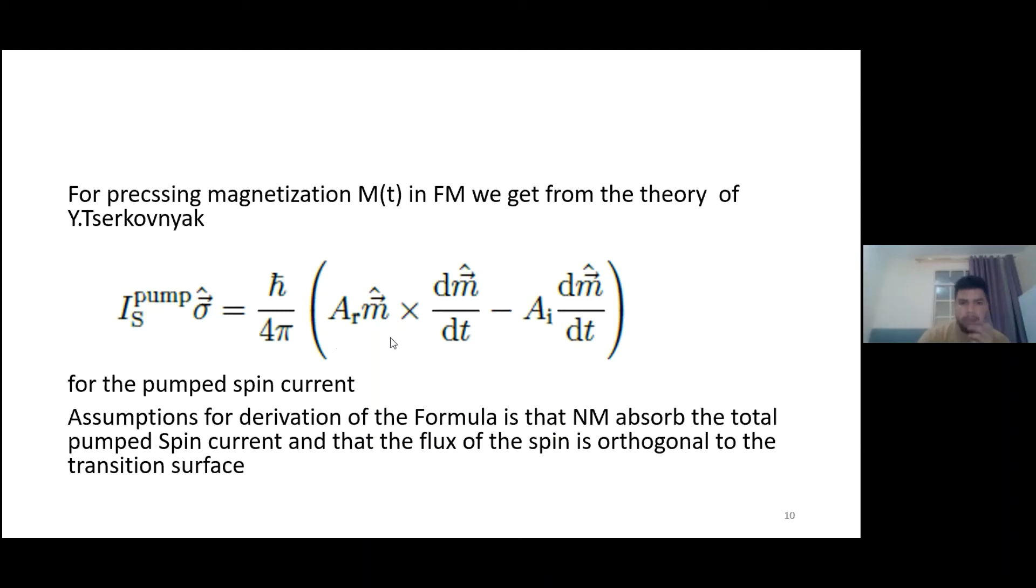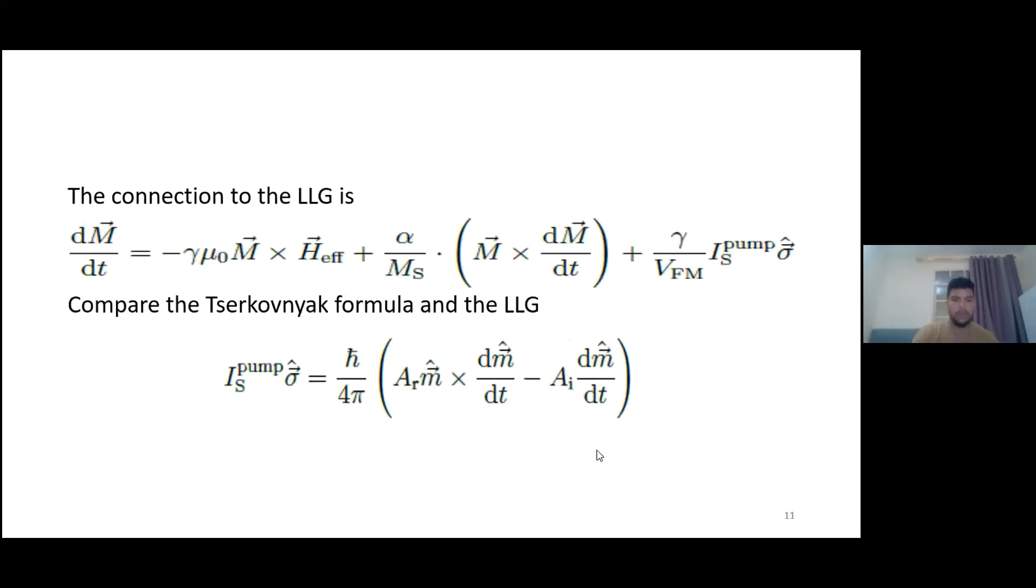Because the assumption is that the normal metal absorbs the total spin current and that the flux of the spin is orthogonal to the transition surface. But in the experiments, it's not like that.